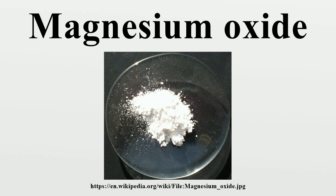Calcining temperatures of 1,000 to 1,500 degrees Celsius produce hard-burned magnesia, which has limited reactivity. Calcining at lower temperatures produces light-burned magnesia, a reactive form also known as caustic calcined magnesia. Although some decomposition of the carbonate oxide occurs below 700 degrees Celsius, this appears rapidly reversible due to absorption of carbon dioxide from the air.